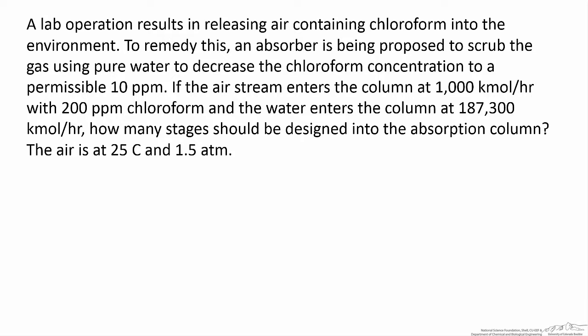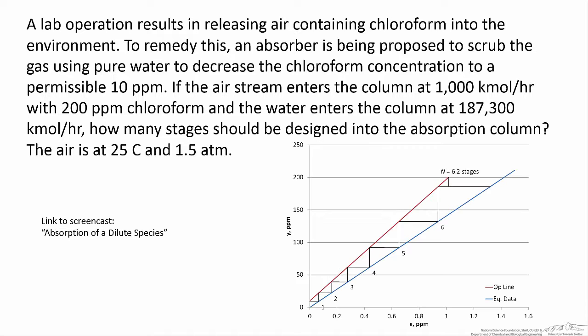In this screencast, we're going to use the Kremser analysis to determine the number of equilibrium stages required in an absorption system. In this particular absorption system, we're taking chloroform in air and trying to remove the chloroform from the air and put it into a water stream. It's important to note that we can also do the same analysis using a graphical method as shown here. For more information on the graphical analysis, follow the link here.